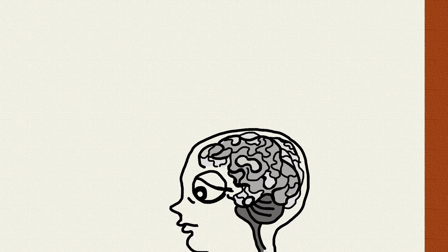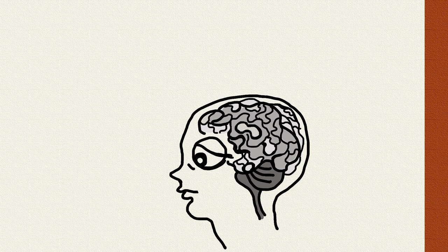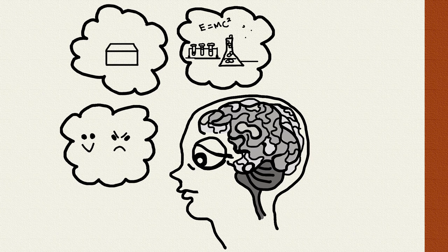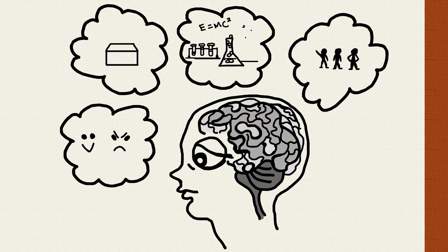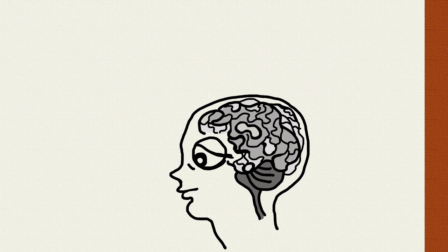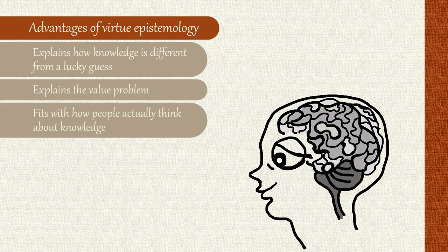And different kinds of knowledge, say moral knowledge, perceptual knowledge, scientific knowledge, knowledge of other persons, that's another important one. All these different kinds of knowledge, we can say, require different kinds of virtues. Another way to put it is that there are different sources of these different kinds of knowledge, and a virtue theoretic framework can accommodate that very well.